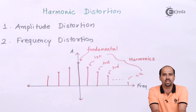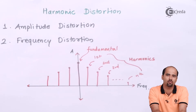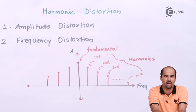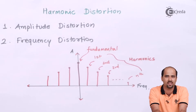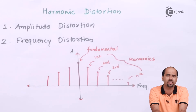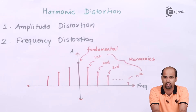Let's talk about harmonic distortion. Harmonic distortion is of two types: one is amplitude distortion and another is frequency distortion. Whenever I am talking about amplitude distortion, there is no same amplitude for both cycles. For example, if I am talking about the first half cycle, I am getting 10 volts, and in the negative half cycle, I am getting 9 volts — that difference is nothing but amplitude distortion.